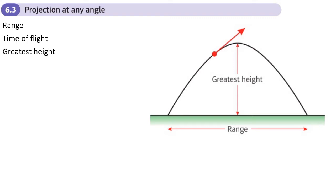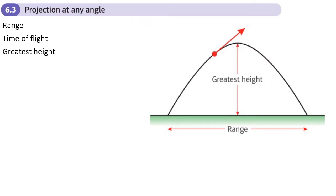Something I mentioned in the first section: what happens at the greatest height. You can see the greatest height on this diagram — it happens to be at that point there, depending on the point of projection. What's important at the greatest height is that the vertical velocity is zero. It starts at an initial velocity, slows down as it gets to the peak, comes to zero, and then drops again. The horizontal velocity is always the same.